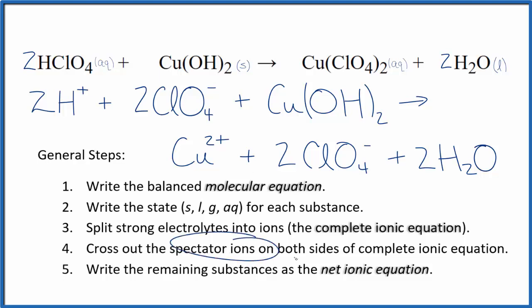Now we can cross out the spectator ions that are on both sides of the complete ionic equation. In the reactants we have two perchlorate ions. In the products we also have these two perchlorate ions. But that's the only thing that's the same. These are the spectator ions. We can cross those out.